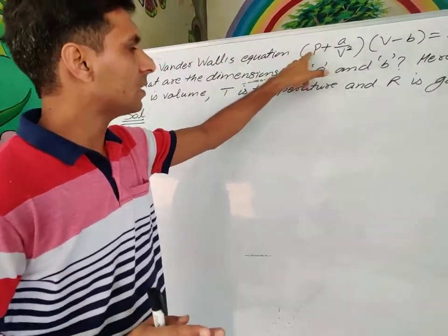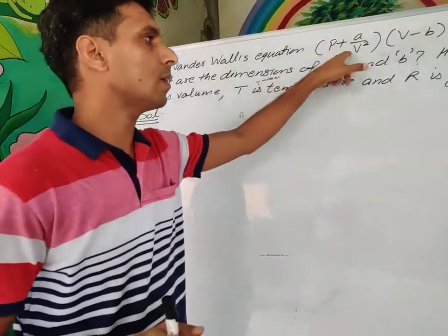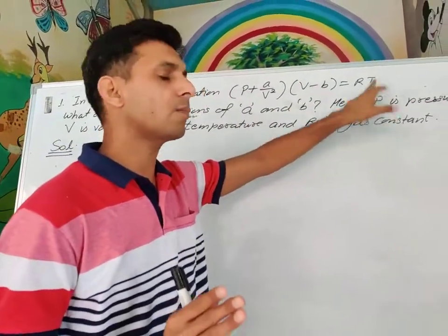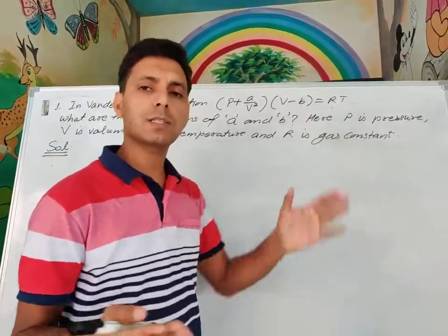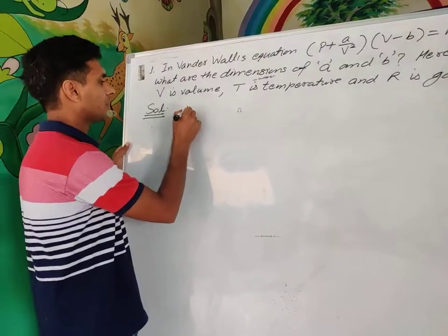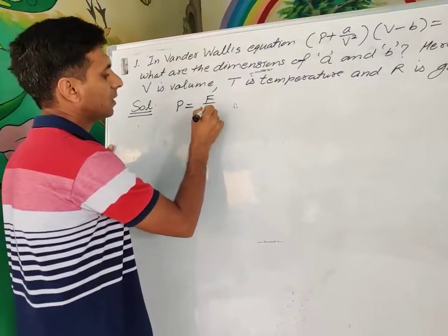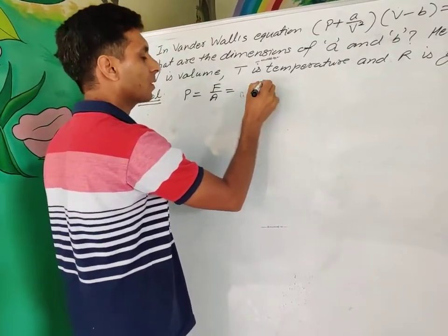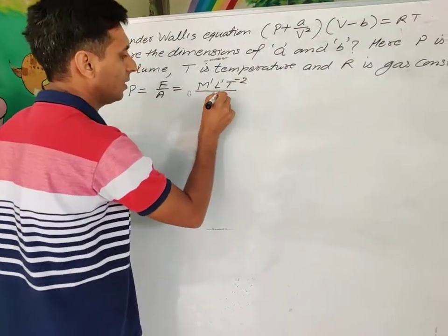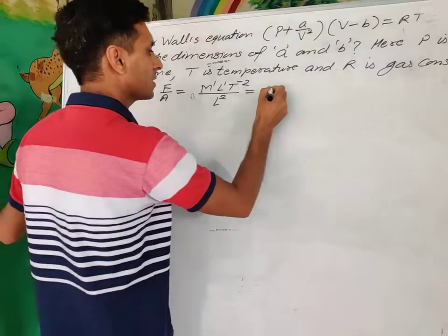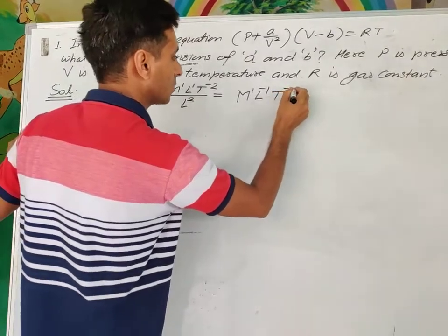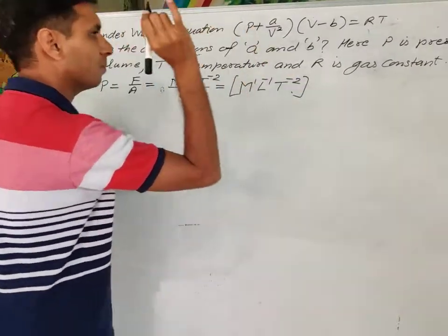If you don't remember the dimensions of pressure, don't panic. Pressure equals force divided by area. Force has dimensions M¹L¹T⁻², and area has dimensions L². So the dimensions of pressure are M¹L⁻¹T⁻². Now, pressure can only be added to pressure, so A/V² must also equal pressure, meaning A = pressure × V², which gives A dimensions of M¹L⁻¹T⁻² × (L³)² = M¹L⁵T⁻².